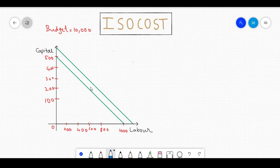One thing to remember is that higher ISO cost showcases a higher level of cost to the producer. So, if I draw an ISO cost line somewhat like this, then you can clearly see that the cost of labour and capital has increased.